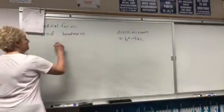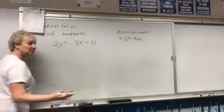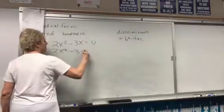Okay, 2x squared minus 3x equals 4. What's the first thing you should do?